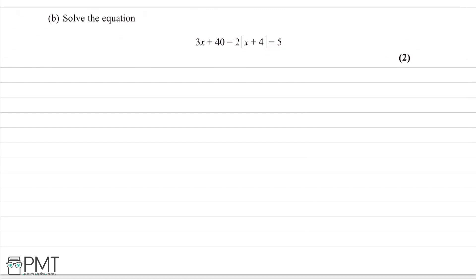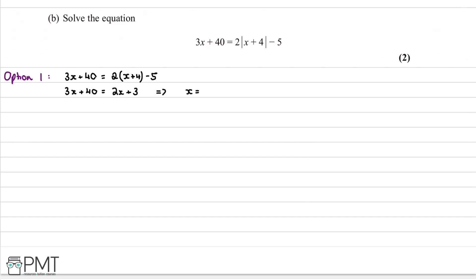We're going to have two options depending on the absolute value. Option 1 is the positive case: 3x + 40 = 2(x+4) - 5. Tidying this up, the right-hand side becomes 2x + 8 - 5 = 2x + 3. Subtracting 2x from both sides gives x = 3 - 40 = -37.